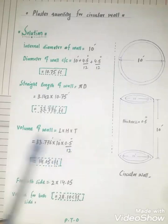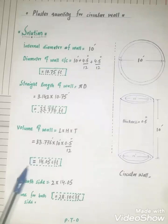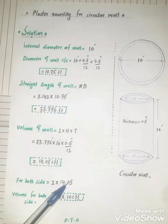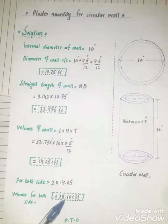Volume of plaster is equal to 14.05 cubic feet. This is the volume of plaster for one side. For both sides, multiply by 2: 14.05. Volume for both sides is equal to 28.10 cubic feet. This is the wet volume of mortar for both sides.